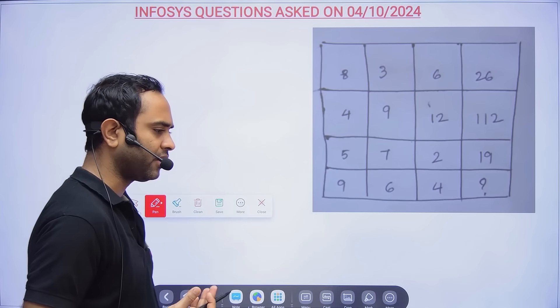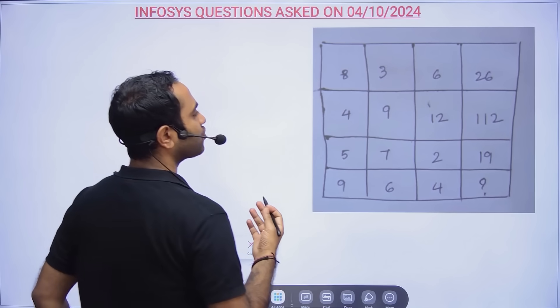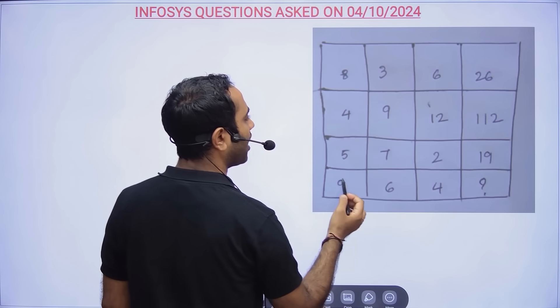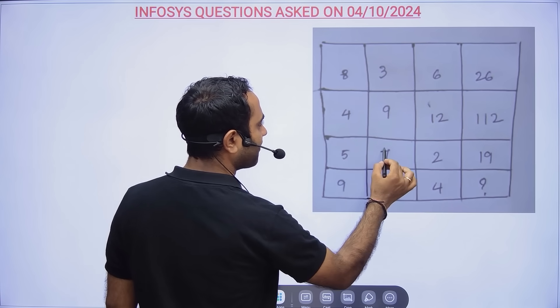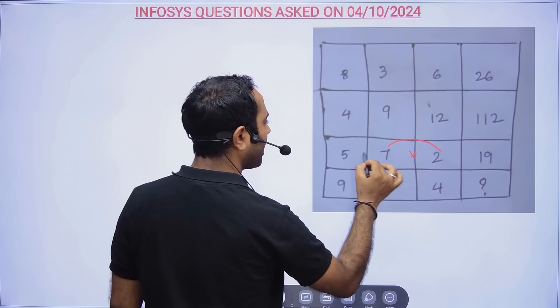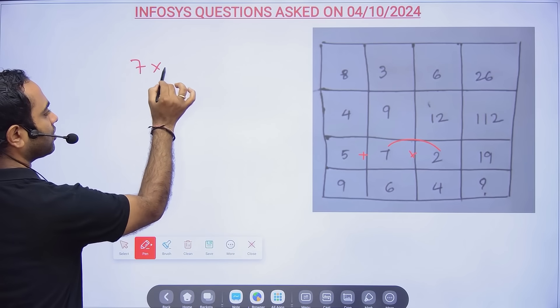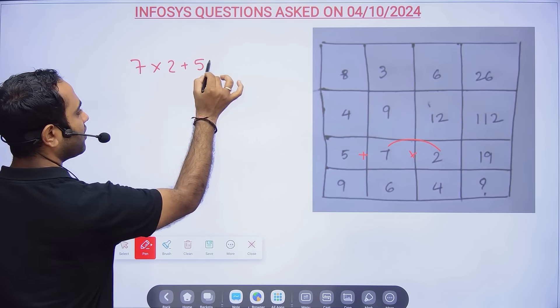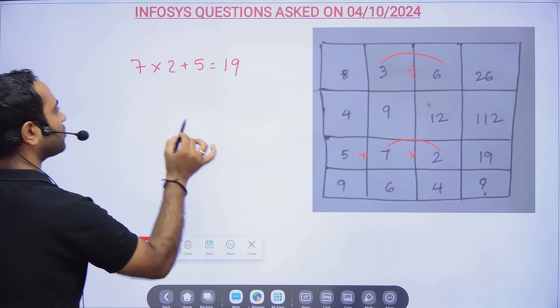Now, 8 3 6 26, 4 9 12 112, 5 7 2 19. This is easy to guess: 7 × 2 = 14, and 14 + 5 = 19. This gives you the idea: second × third + first one.